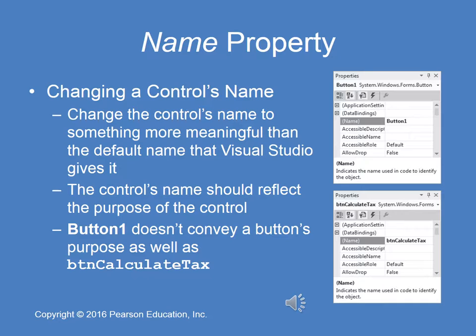The first property I want to discuss in detail is the name property of a control. When you use the toolbox to place a control on a form, the system gives it a default name — Button1, Form1, TextBox1, etc. However, we want to change the control's name to be more meaningful and better reflect its purpose. For example, Button1 doesn't convey purpose as well as btnCalculateTax. That's called camel case — BTN means it's a button, then each subsequent word begins with a capital letter.